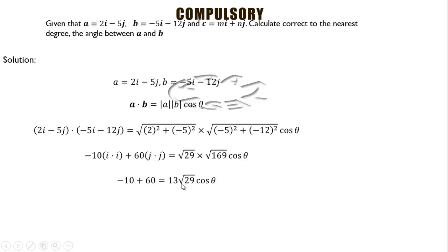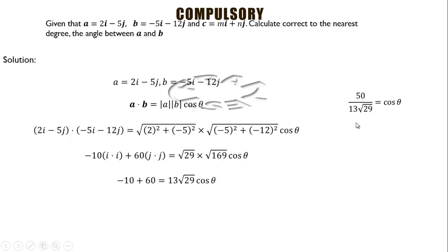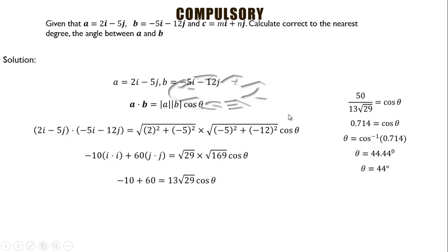Simplifying, we obtain 50 = 13√29 · cosθ. Dividing through by 13√29, then simplifying gives us 50/(13√29) = cosθ. In decimals this gives 0.714. Taking the cosine inverse of both sides gives θ = 44 degrees. So to the nearest degree, the angle between vectors a and b is 44 degrees.